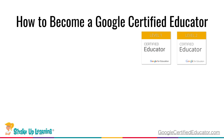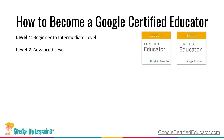Let's break this down. Level one is for beginners to intermediate — from barely able to log in all the way to feeling pretty good about your skill set. Level two is definitely more of the intermediate to advanced level, so it's going to take things up a notch.